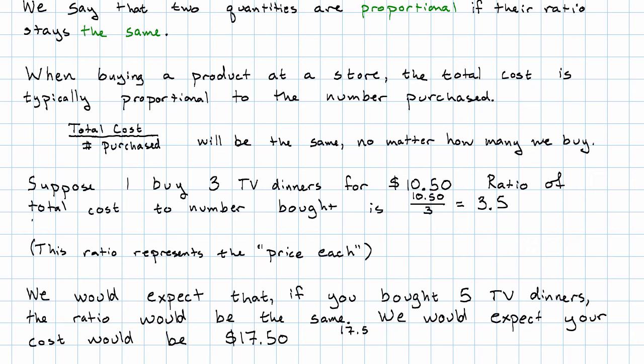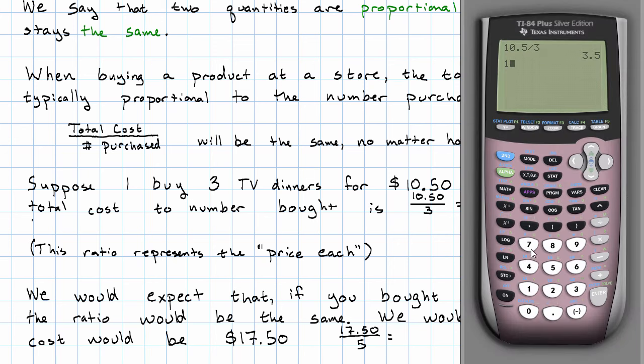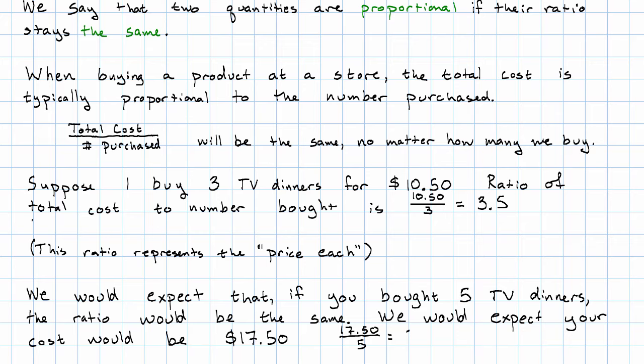Well, 17.50 over 5. That's the same value. 17.5 divided by 5 is also 3.5.